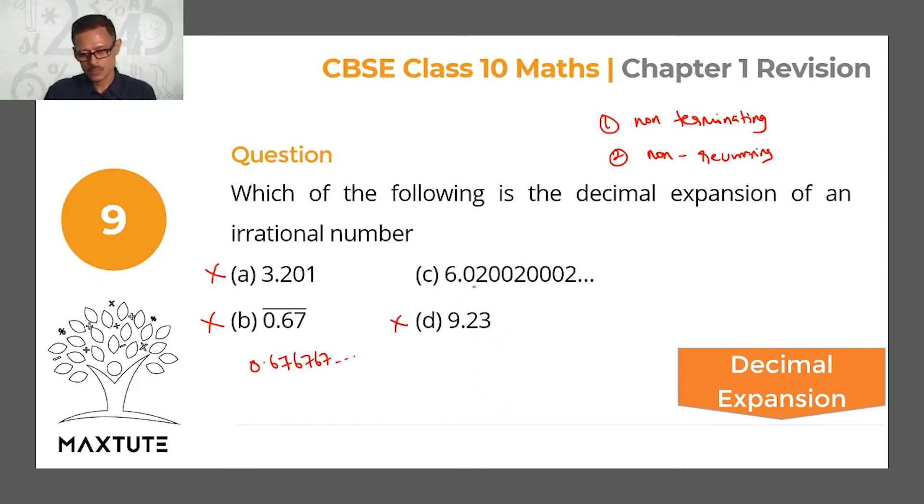Look at this number, 6.1—these dots say that it is non-terminating. Let's see if the pattern is repeating. 0.2, 0.02, 0.002, which means that it is non-recurring. So this is the number which is an irrational number.